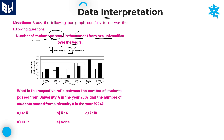Now look at the first question: what is the respective ratio between the number of students who passed from University A in the year 2007 to the number of students who passed from University B in the year 2004? University A in 2007 is the white color — that value is 50,000.